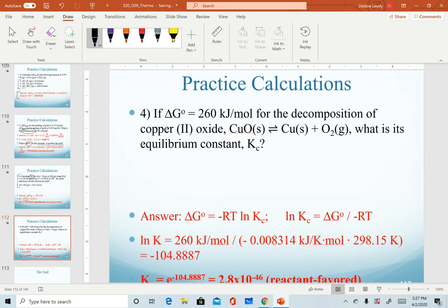For our fourth and final practice calculation, we are given delta G naught for a given reaction and asked to calculate the equilibrium constant Kc. And realize again, remember that the subscript included with K is irrelevant. The same equation would apply no matter what that subscript was for K.